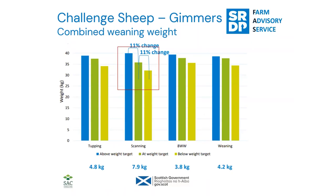The same data for gimmers shows that not hitting target weights as a gimmer — not hitting 80 percent of mature weight at tupping — means they go on to produce lambs of lower weight. The combined weaning weights shown here are the weight of one or two lambs combined. Below-target gimmers rear lambs with a total weight about 11 kilos less, while above-target gimmers push that considerably higher. The difference between above and below target is a fairly substantial 7.9 kilograms, which has a big impact on profitability.